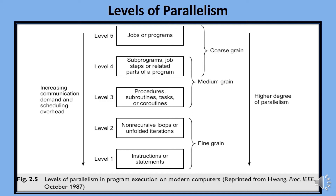Level 4 includes subprograms, job steps, or related parts of a program. The execution of a program may involve a combination of these levels. The actual combination depends on the application, formulation, algorithm, language, program, compilation support, and hardware characteristics. These can be categorized as Fine Grain, Medium Grain, and Coarse Grain Parallelism.